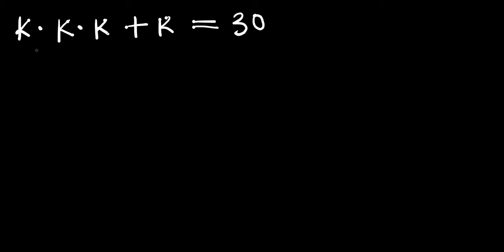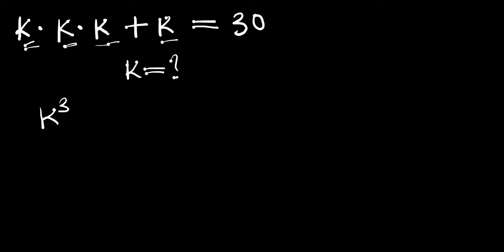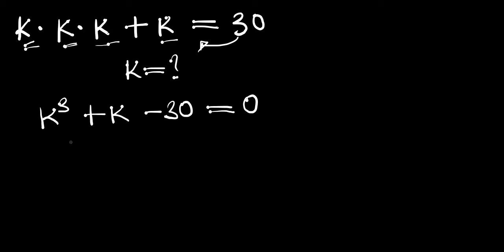Hello, in this video we have the problem: k times k times k plus k equals 30, and we are solving for the value of k, both complex and real. We will recopy the problem: k times k times k is k to the power of 3, plus k, and bringing the 30 over we have minus 30, and this equals zero.